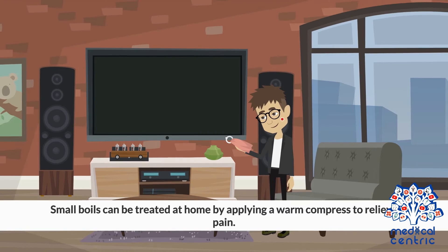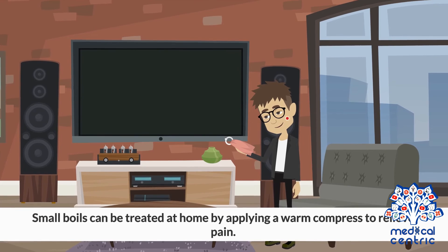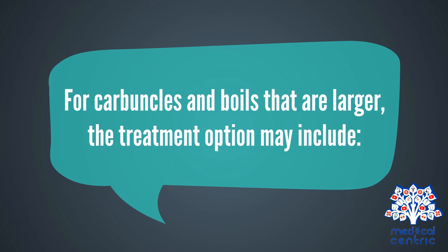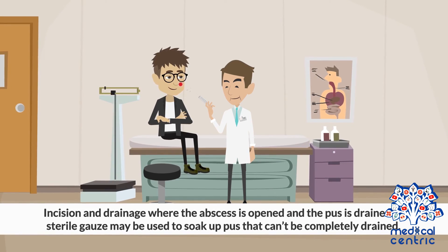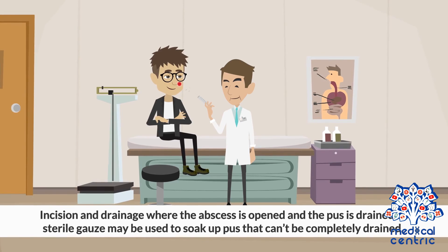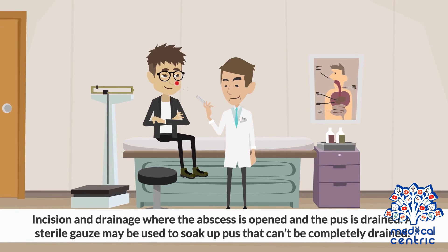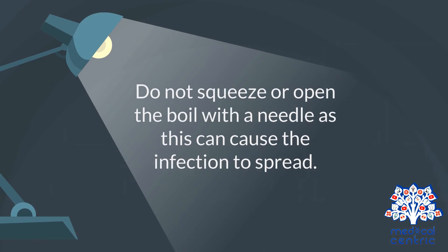Small boils can be treated at home by applying a warm compress to relieve pain. For carbuncles and boils that are larger, the treatment option may include incision and drainage, where the abscess is opened and the pus is drained — a sterile gauze may be used to soak up pus that can't be completely drained — as well as antibiotics. Do not squeeze or open the boil with a needle, as this can cause the infection to spread.